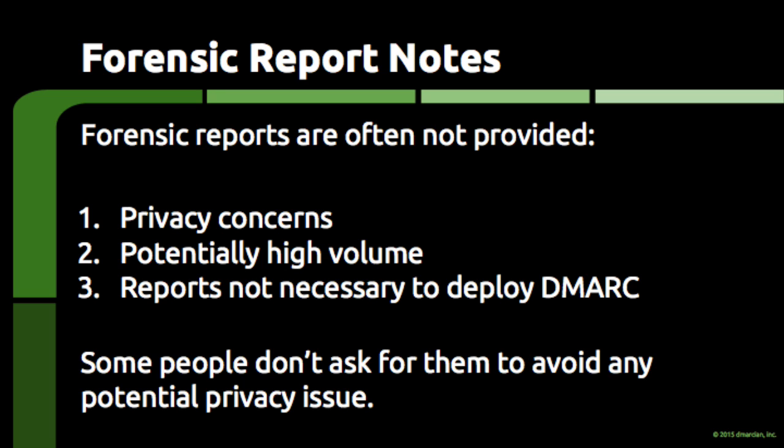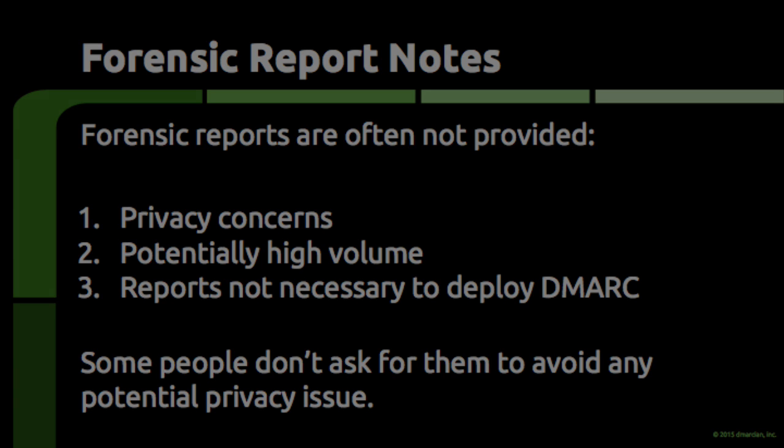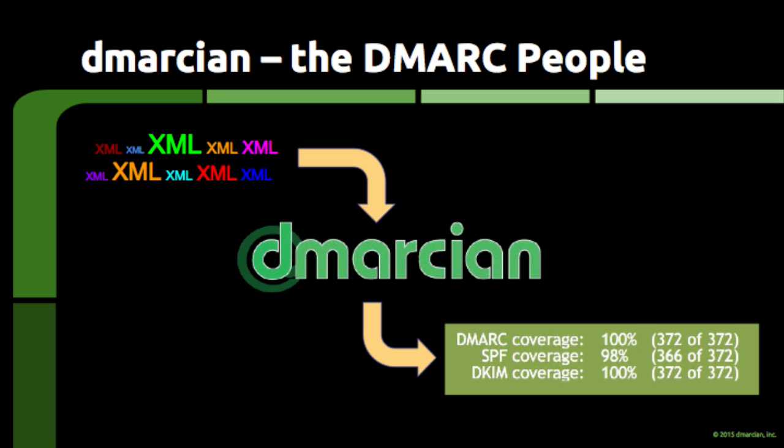Lastly, quite a few organizations don't even want to ask for these types of reports as they want to avoid any sort of potential liability in the area of privacy. Still, these reports can shed light on the specific types of abuse that a domain might be encountering. DMARC processes both types of feedback to make deployment far easier for most types of people. The visibility provided by the feedback reports, when processed by tools like DMARC, give the domain owner the ability to deploy SPF and DKIM with a very high degree of accuracy.